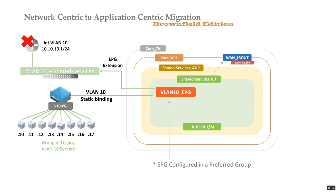What happens is all traffic from these VLAN 10 workloads hits the ACI fabric when trying to communicate with anything outside of the VLAN 10 network. That could be traffic going through the WAN layer 3 out or to another bridge domain in ACI, depending on how far you went with your migration.